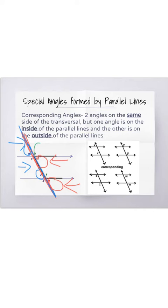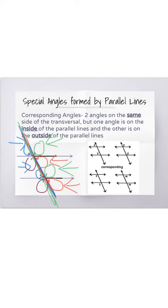You also have B and F — they are on the same side of the transversal, but one is inside the parallel lines and one is outside, so B and F are corresponding angles. Finally, you have C and G — they are both on the same side of the transversal, one is inside the parallel lines and one is outside, so those are corresponding angles. In this case you had four sets of corresponding angles.